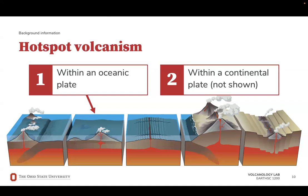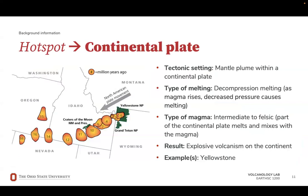Hotspot volcanism is different depending on the type of tectonic plate involved. A hotspot under a continental plate will generate a series of volcanoes across the landscape. As you can see in this example, the volcanoes increase in age in the same direction as plate movement. Because part of the continental plate melts and mixes with the magma, the composition of this magma is going to be intermediate to felsic, making these volcanoes explosive. An excellent example of a hotspot beneath a continental plate is Yellowstone.